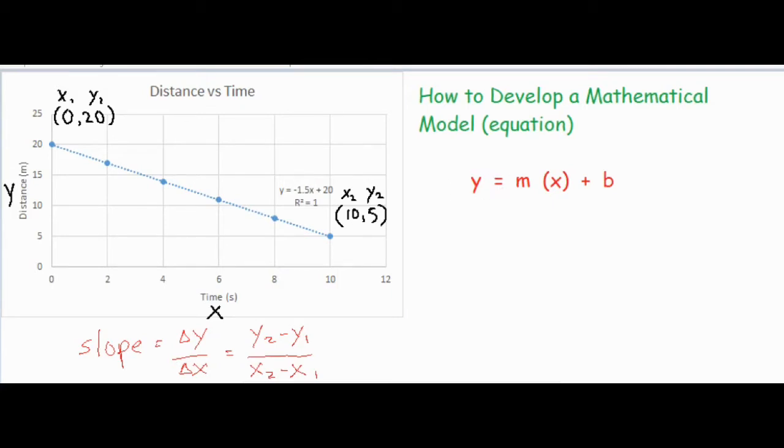So what you want to do is substitute specific words or numbers instead of those values. For example, instead of writing y, we know the y variable is distance. So we're going to go ahead and write the word distance because that is our y variable. That's our dependent variable that's displayed on the y-axis.